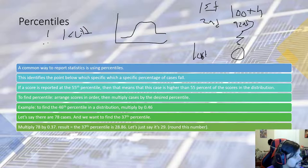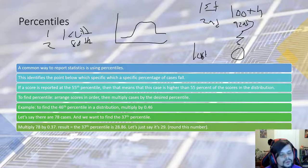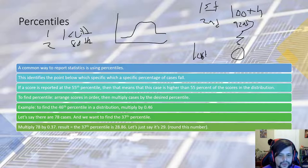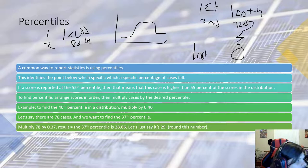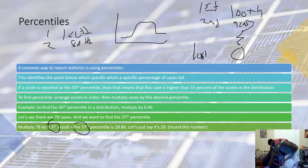In a five-person competition, first place is the 100th percentile, second place is the 80th percentile because there are five people and each represents 20 percent. This is used in ACT, SAT, and GRE score reporting. To calculate a percentile: take the number of cases (e.g., 78) and multiply by the decimal percentile (e.g., 0.37) to get 28.86, which rounds up to the 29th case.